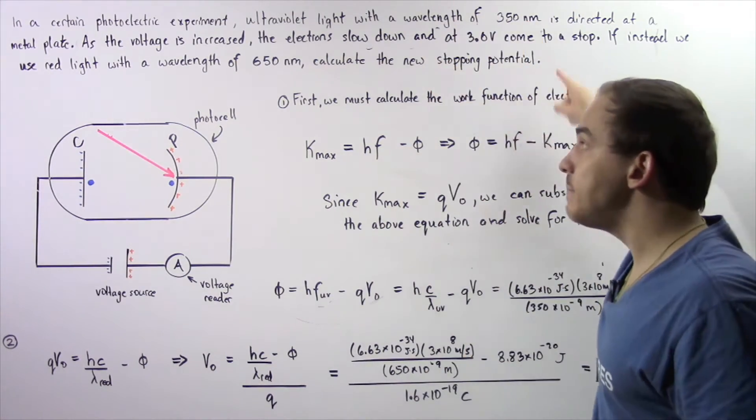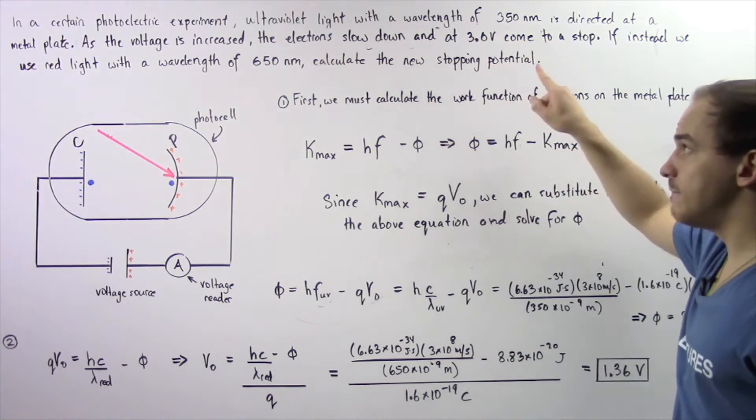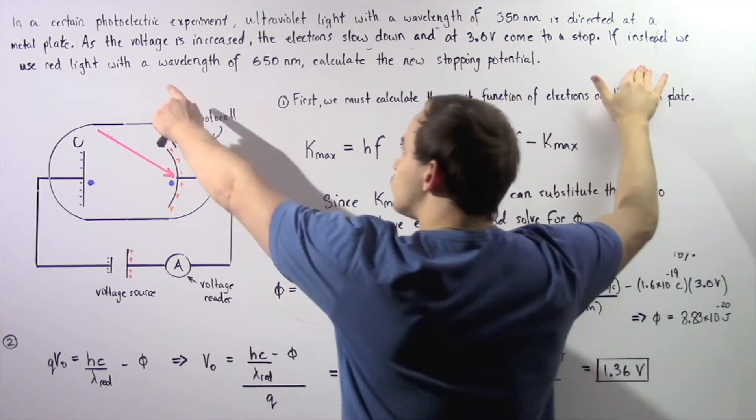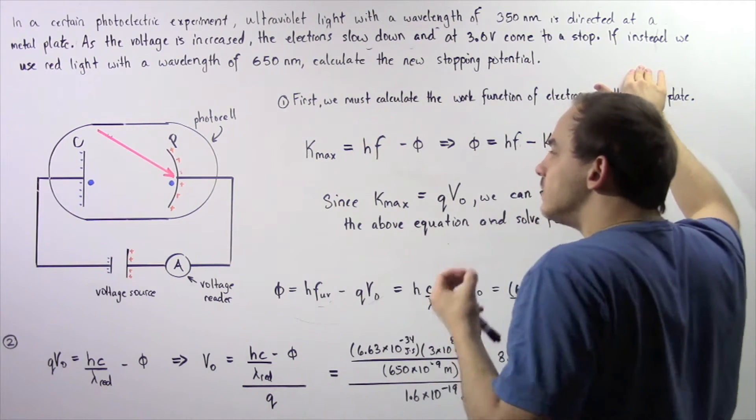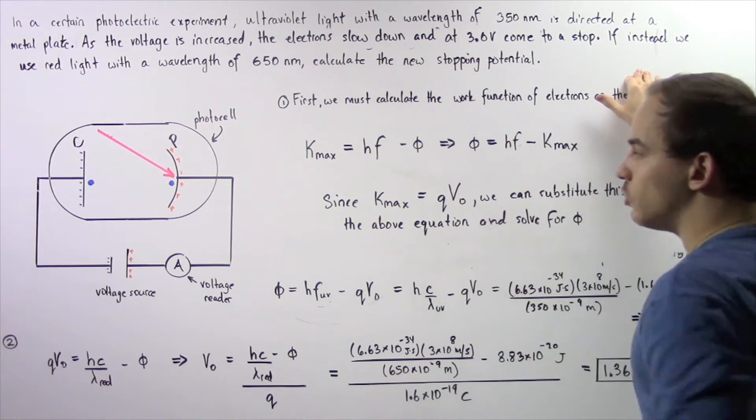So that means the stopping voltage for ultraviolet light is 3 volts. Now if instead we use red light with a wavelength of 650 nanometers instead of UV light, let's calculate the new voltage, the new stopping voltage.